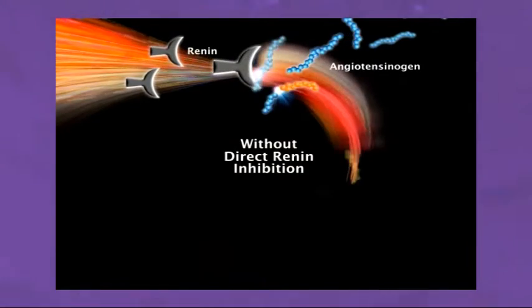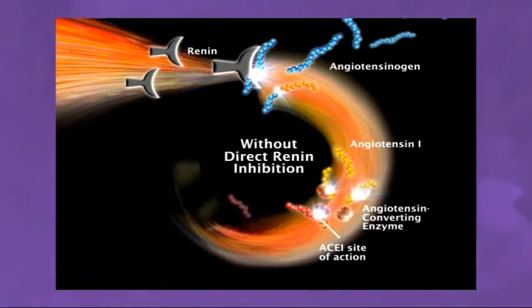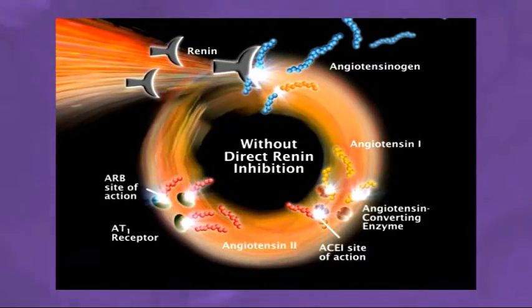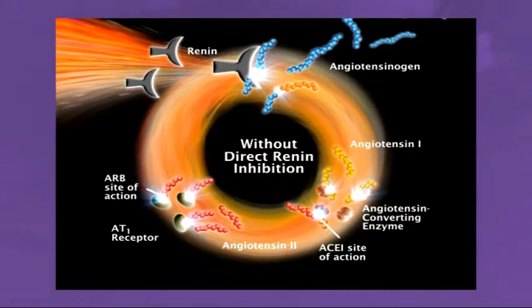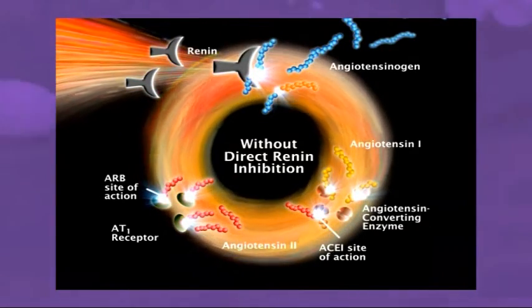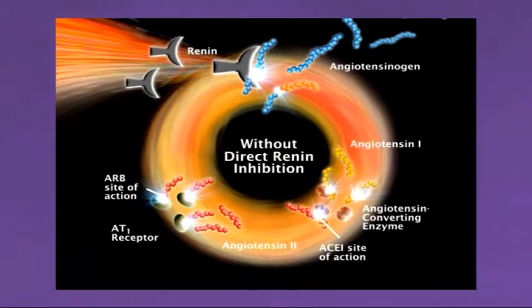The renin system plays an important role in the control of blood pressure. However, most patients with hypertension have an over-activated renin system. This over-activation leads not only to increased blood pressure,